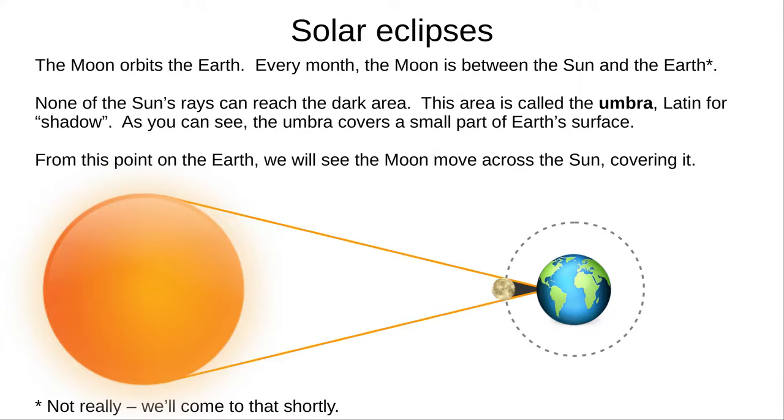We see here the Moon's orbit around the Earth. Once a month, the Moon gets between us and the Sun. We can see a small region, including part of the Earth's surface, that the Sun's rays can't reach.